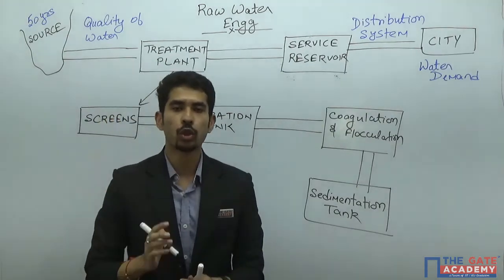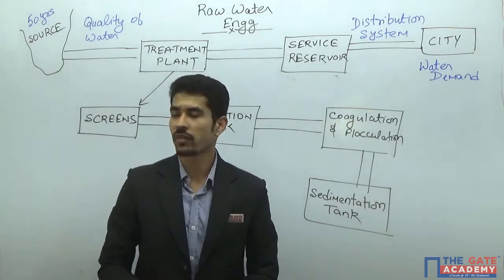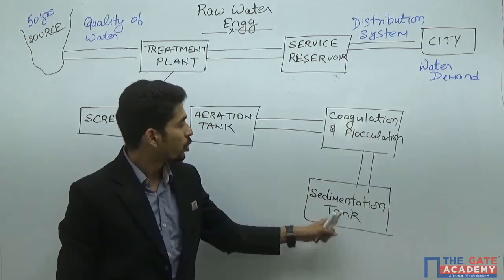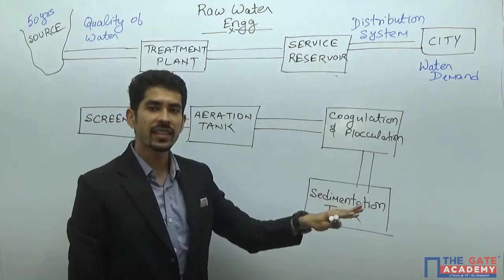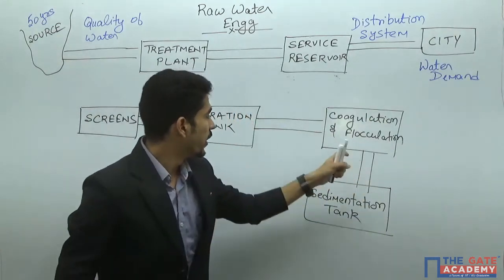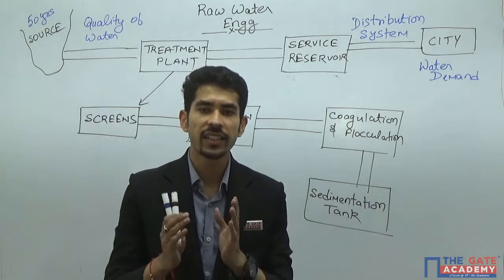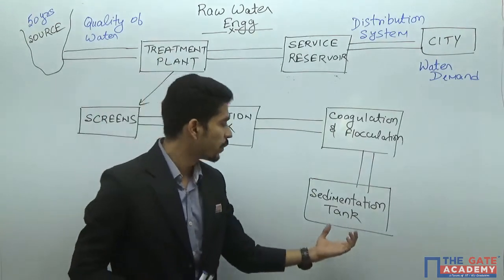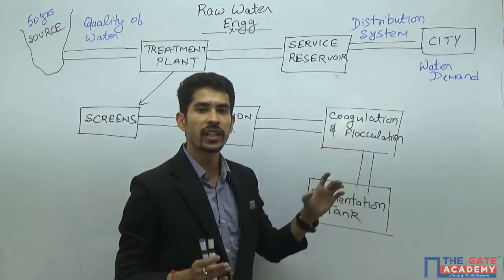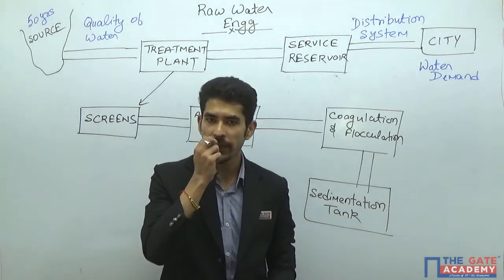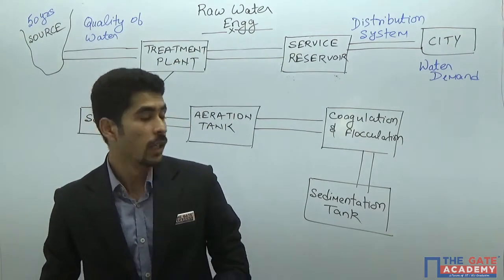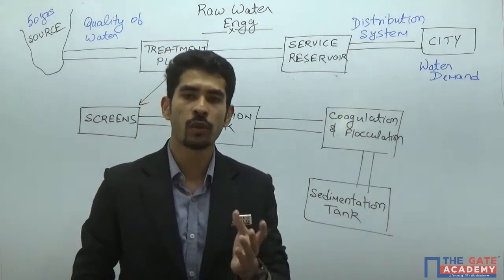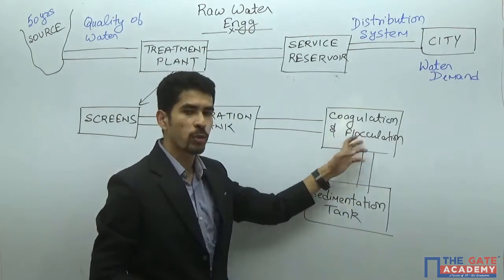Those suspended impurities which are not retained over screens are removed in the sedimentation tank. The coagulation and flocculation process increases the efficiency of your sedimentation tank. In this process, we are increasing the size of the suspended particles — if the size is larger, the settlement efficiency in sedimentation will be greater. If the normal efficiency of your sedimentation tank is around 60 percent, by using coagulation and flocculation before sedimentation, we can increase the removal efficiency of suspended solids to around 80 to 85 percent.